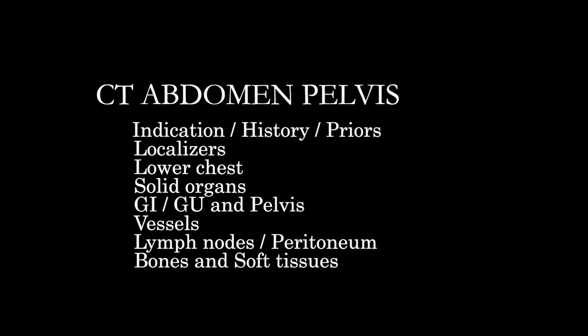As usual, we're going to understand what's going on with the patient by taking a look at the indication, histories, and any prior exams, which could include CT, MRI, X-ray, or ultrasound of the abdomen or pelvis. Then taking a look at the localizers for any anatomy not captured, especially on the cross-sectional images.